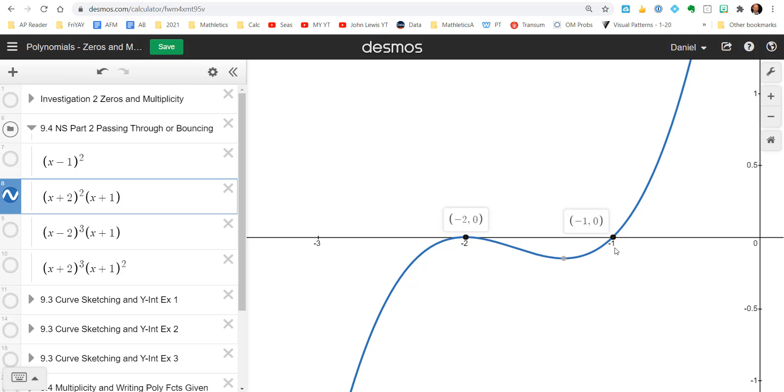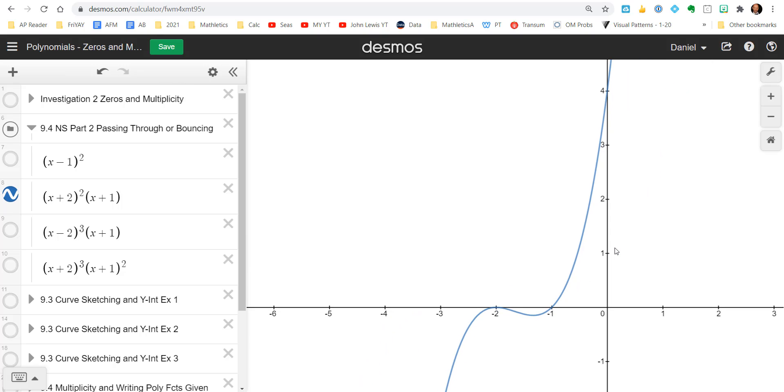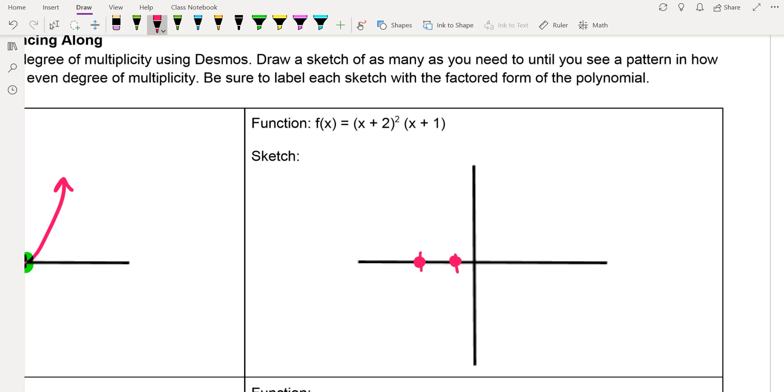So when I sketch that and notice kind of the general shape of this too, the general shape of that, it looks like, you know, it's kind of a cubic example. Yeah, that's kind of cool. All right.